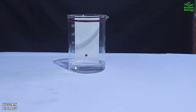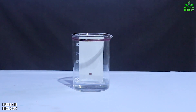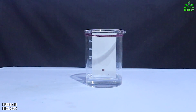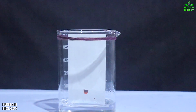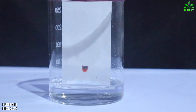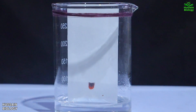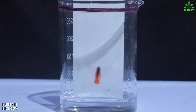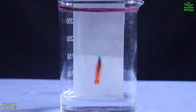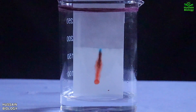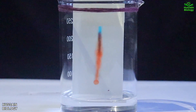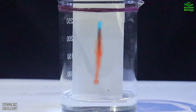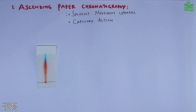Remember, the solvent must not touch the ink directly, so we dip just the bottom edge of the paper into the solvent, shown in the video. From here the solvent goes up by capillary action, taking the ink mixture with it, and we get the final chromatograph shown in the images.